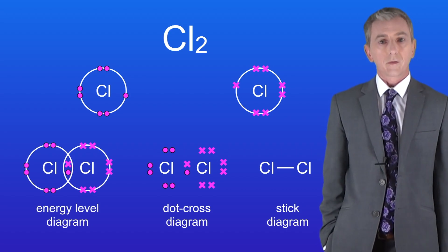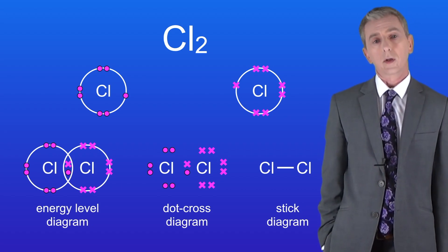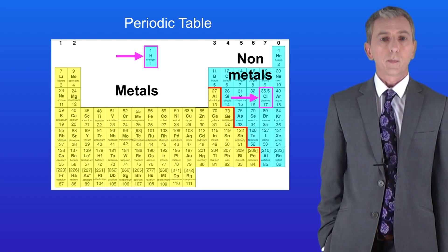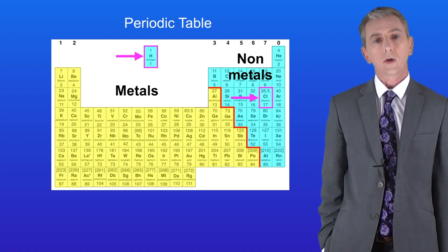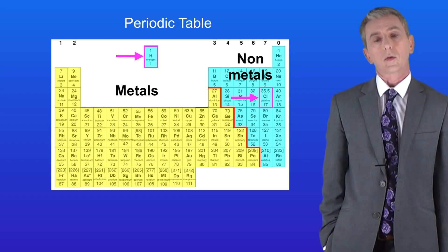Okay we're going to look at one final small covalent molecule. This is called hydrogen chloride which has the formula HCl. As we've seen before both hydrogen and chlorine are nonmetals so this is a covalent molecule.